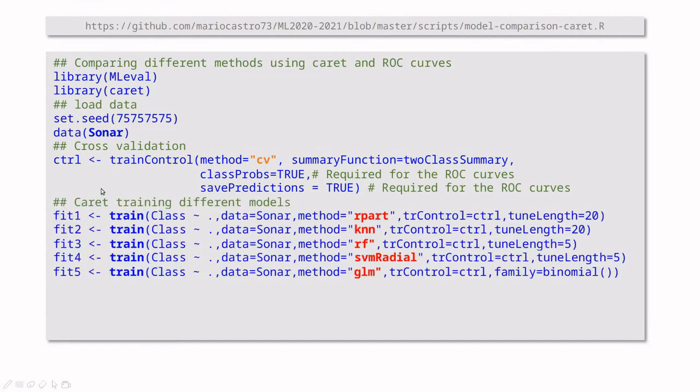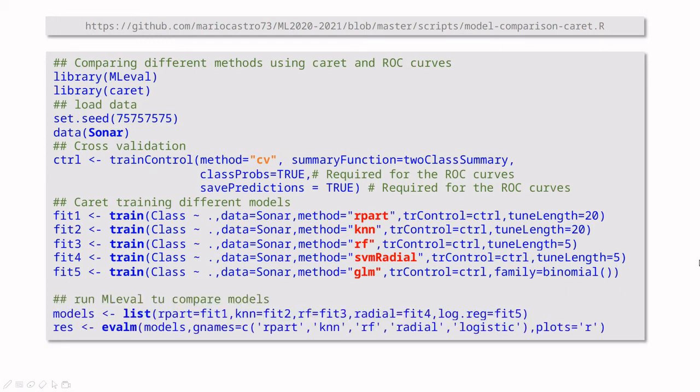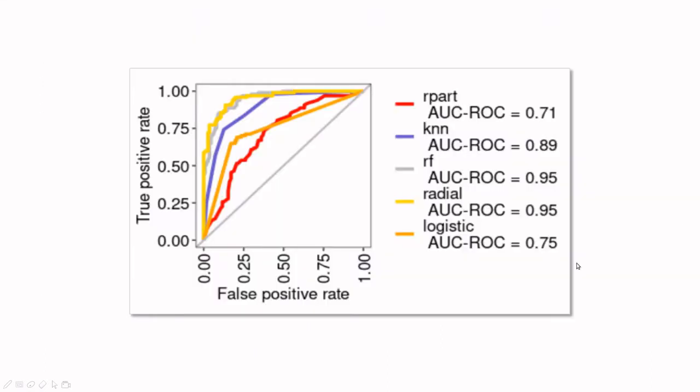So here I'll show you five trains. In this code I have eight trains in total. So the first one is going to be decision tree, k-NN with 20 different values, random forest, support vector machines with a radial kernel, and linear regression with binomial family, meaning logistic regression. So you can run all of them, and then I'm going to plug all of them into a list. And I'm going to call this function eval m, which comes from this library. And here's what you find.